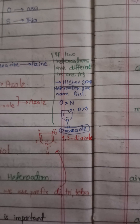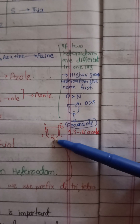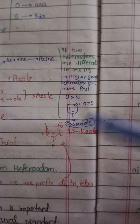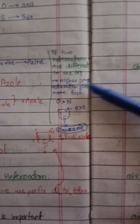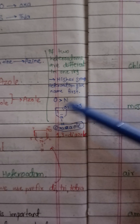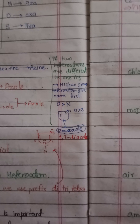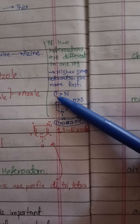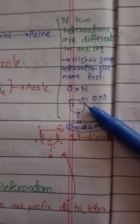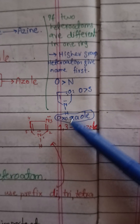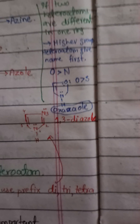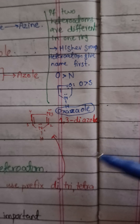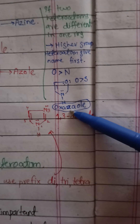If different heteroatoms are present in the ring, we count from the higher priority heteroatom. In the priority list, oxygen has more importance than nitrogen. So we add the name of oxygen first — 'oxa' — then the name of nitrogen — 'aza' — and then since it is a 5-membered ring we add '-ole'. The IUPAC name of this compound becomes 'oxazole'.